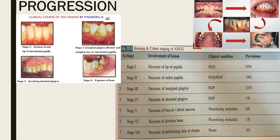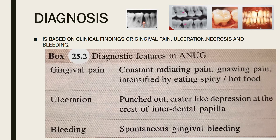Diagnosis is based on clinical findings of gingival pain, ulceration, necrosis, and bleeding. The diagnostic features of ANUG are: gingival pain — constant radiating type intensified by spicy or hot food; ulceration appearing as punched-out crater-like depressions at the crest of the interdental papilla; and spontaneous gingival bleeding.